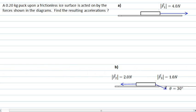In this question, we're asked to consider a 0.2 kg puck upon a frictionless ice surface, and it's being acted on by the forces shown in the diagrams. So we've got two cases here. And we're asked in each case to find the resulting accelerations.